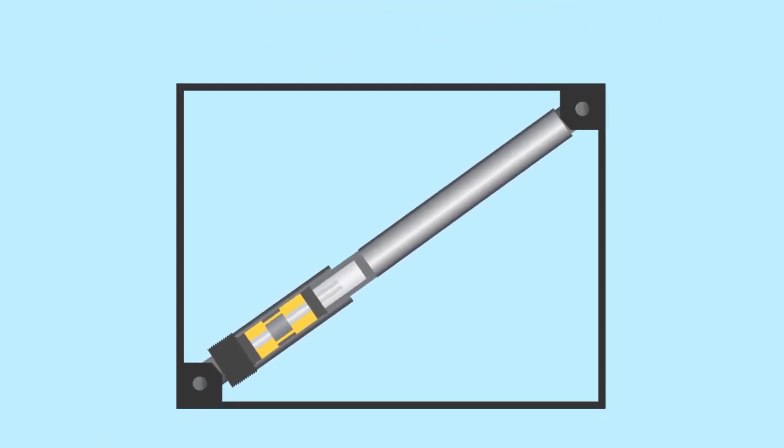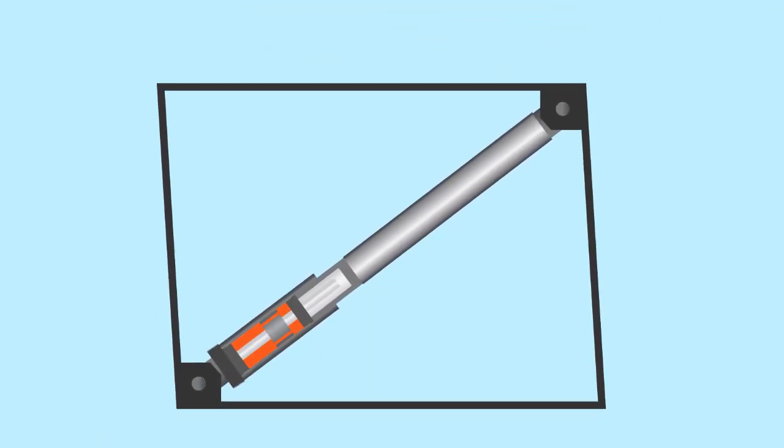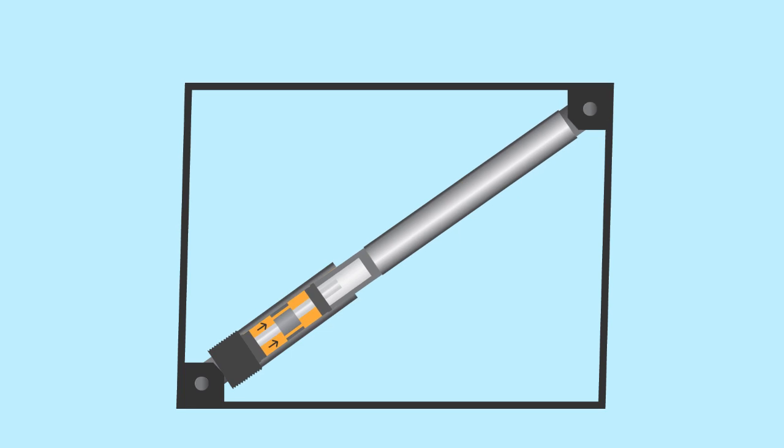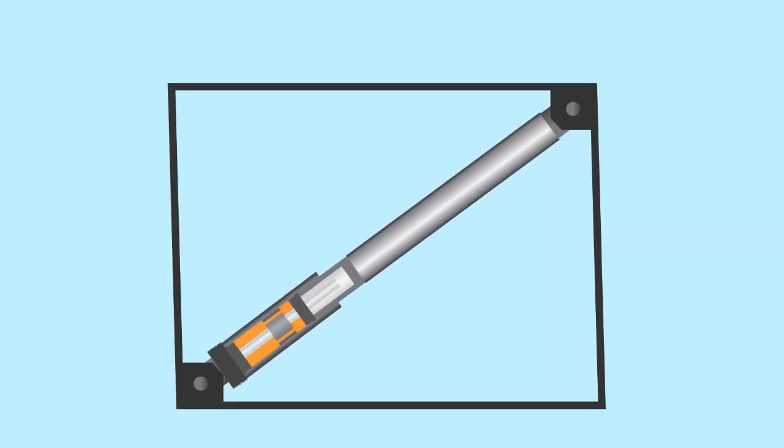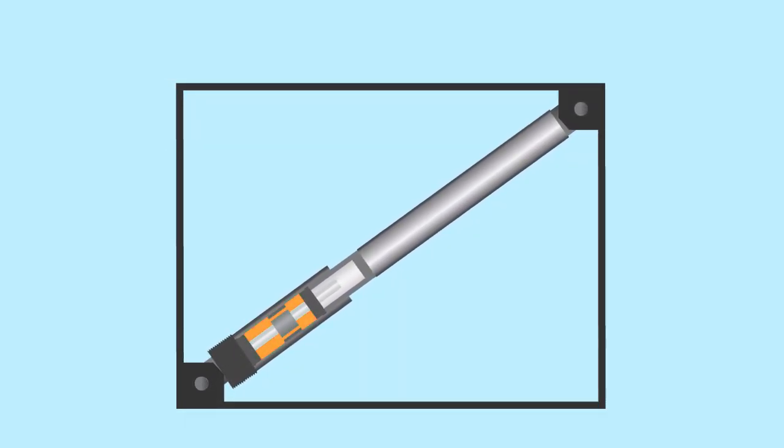As a building moves during an earthquake, the damper piston forces fluid from chamber to chamber, converting the dynamic energy into heat energy, which is absorbed and dissipated by the damper itself.